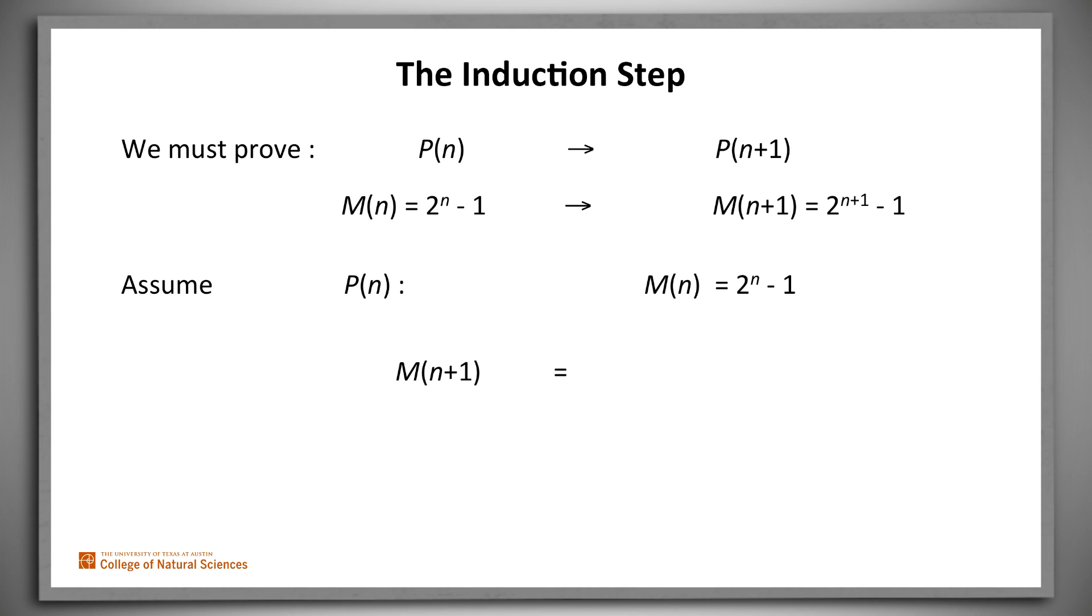Now we need to make a claim about the number of moves required for n plus 1 disks. From our analysis of our algorithm, we know that we have to move n disks out of the way, and then back into place. So that's 2 times m of n plus 1 to move the bottom disk.